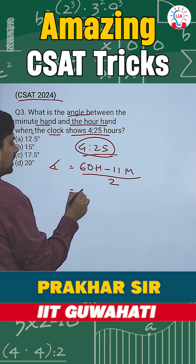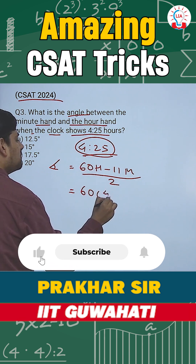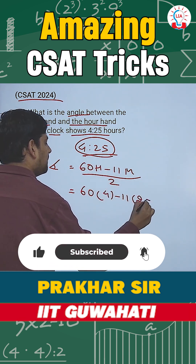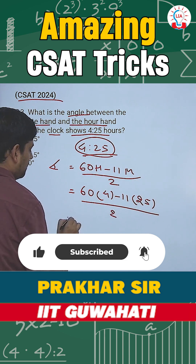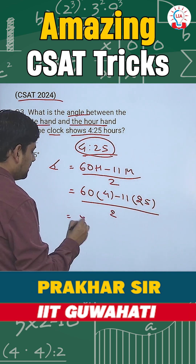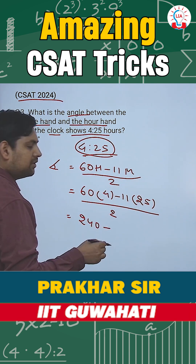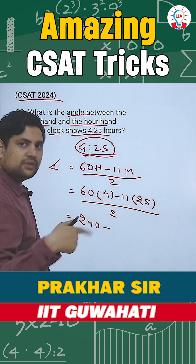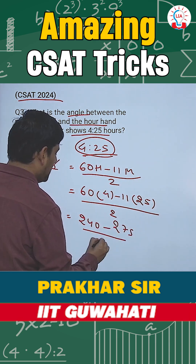So this will come out to be: 60 into h — how many hours are completed — that is 4, minus 11 into how many minutes are done — that is 25, by 2. This comes out to be 4 into 60 is 240, minus 11 into 25. 25 into 10 will be 250, plus 25 is 275, by 2.